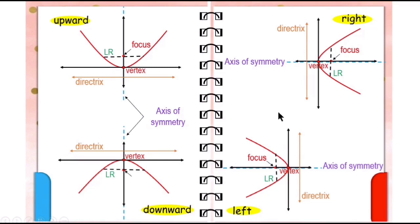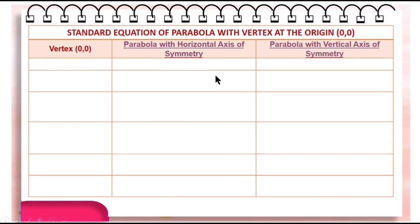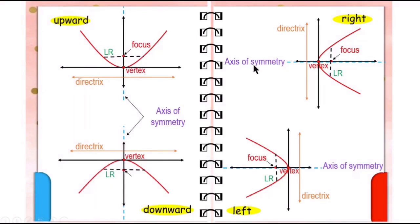And if the opening of the parabola is either right or left, the directrix is vertical. If the opening of the parabola is to the right, the directrix is to the left of the vertex. And if the parabola opens to the left, the directrix is to the right of the vertex. So these are the kinds of parabola we're going to be dealing with. The characteristics of parabolas with vertex at the origin are summarized below.